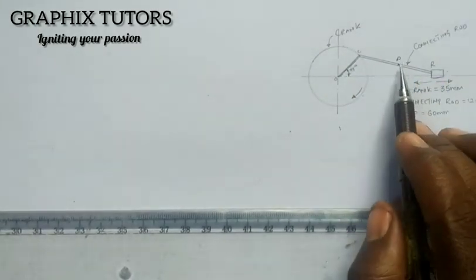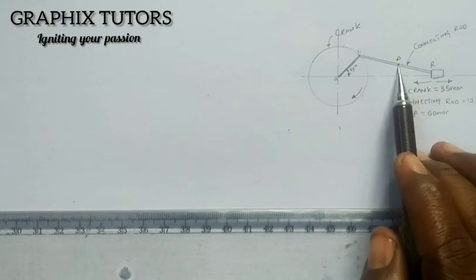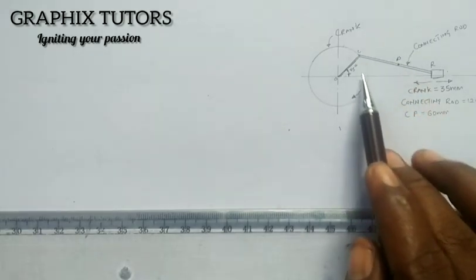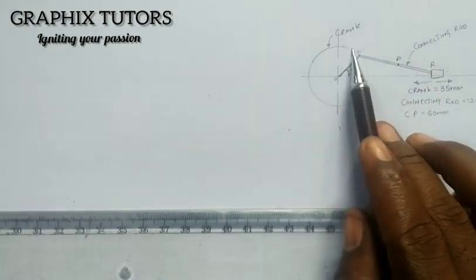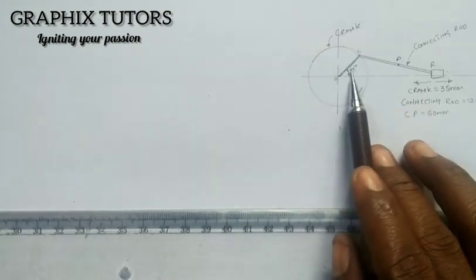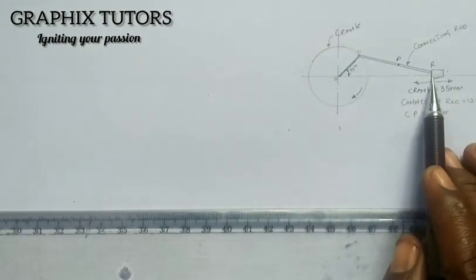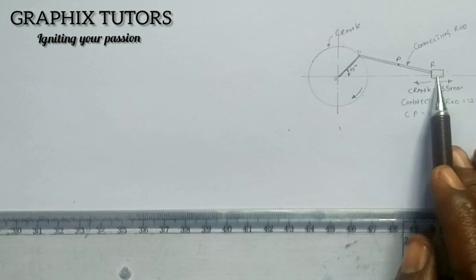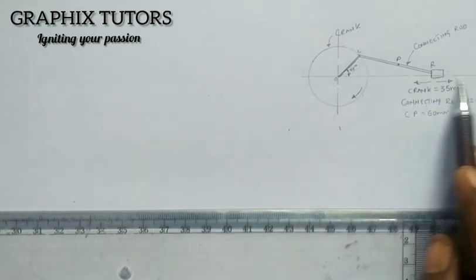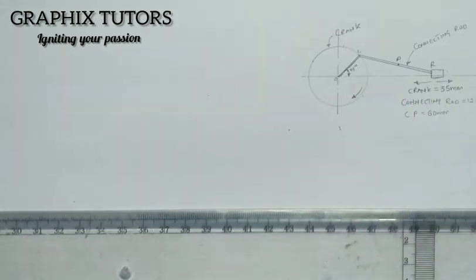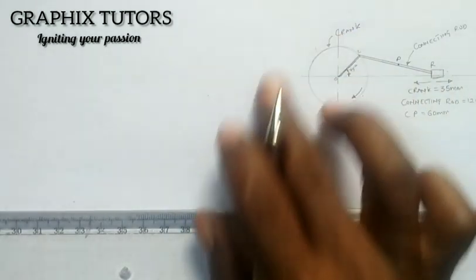Now we're asked to find the locus P. The path at which P is going to form as this crank rotates clockwise and as this pivot joint moves in a linear manner. So what you do here is to first of all draw your crank.